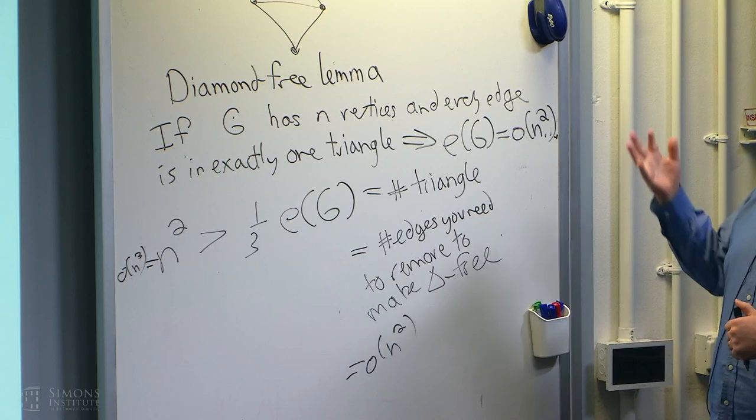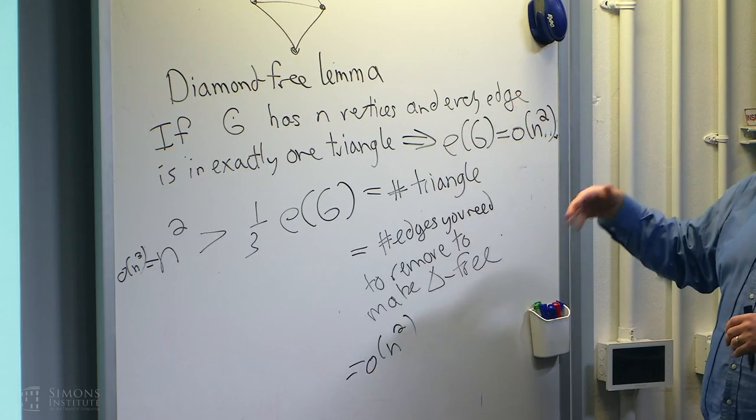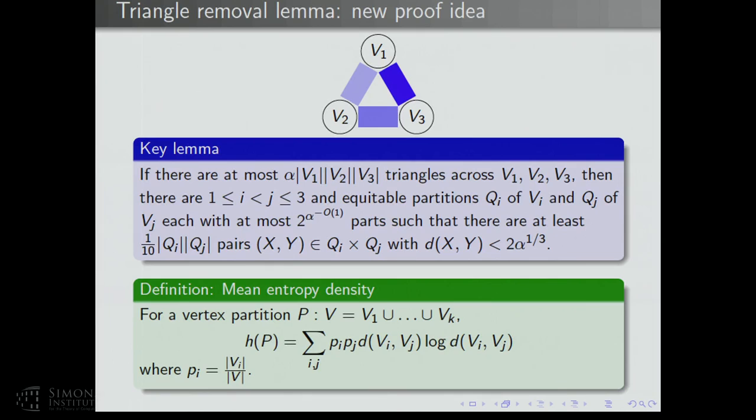The diamond-free lemma is equivalent to several other results — it was originally called the 6-3 theorem, it's equivalent to a hypergraph extremal problem, and there's also a version in terms of induced matchings in graphs. This is a corollary of the triangle removal lemma already strong enough to imply some nice theorems in additive combinatorics.